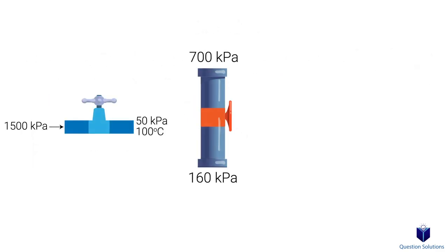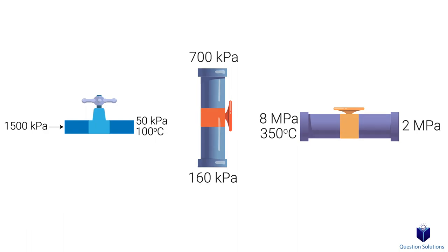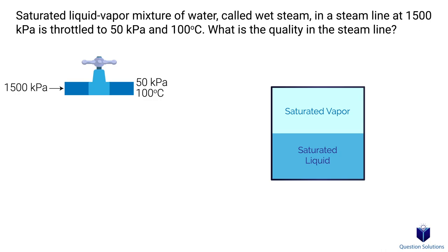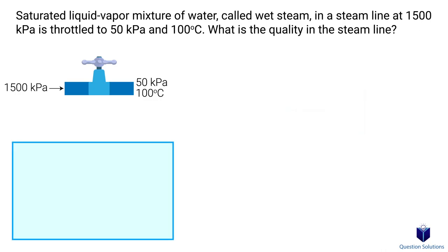Now let's cover a few examples to see how we can use what we just learned. In this question, we're told that there is a saturated liquid mixture of water that's throttled down, and we need to figure out the quality of steam in the line. Quality is the ratio of the amount of vapor to the amount of liquid in a system. The initial pressure is 1500 kilopascals and the final pressure is 50 kilopascals. We don't know the initial temperature, but the final temperature is 100 degrees Celsius.